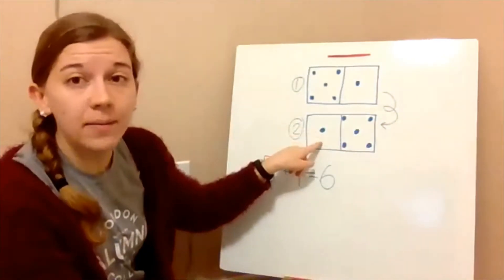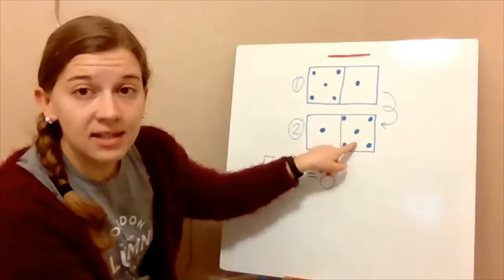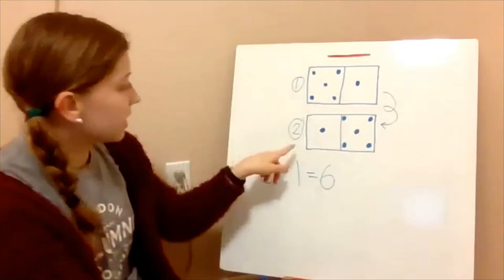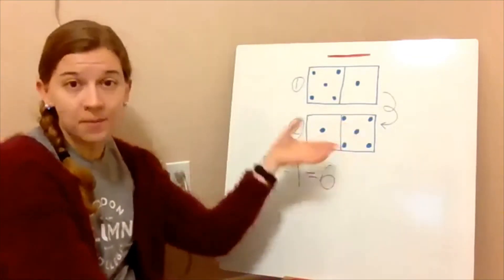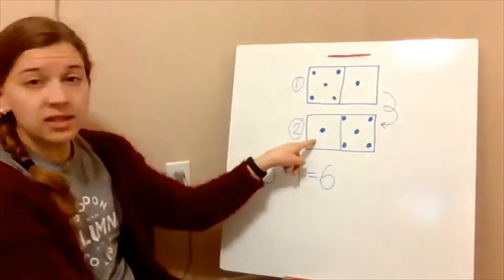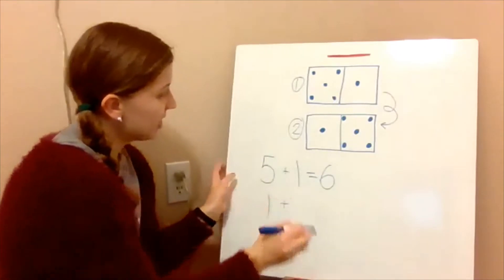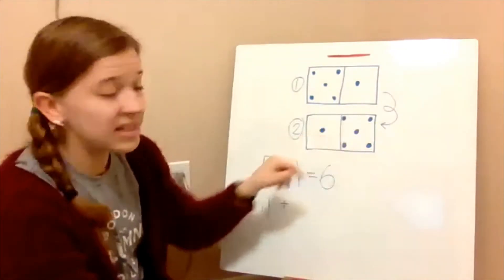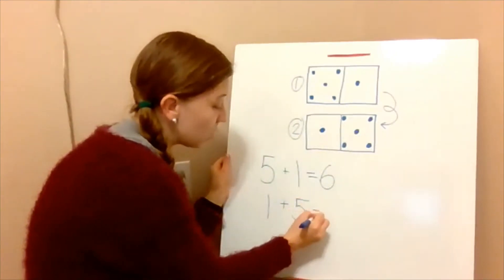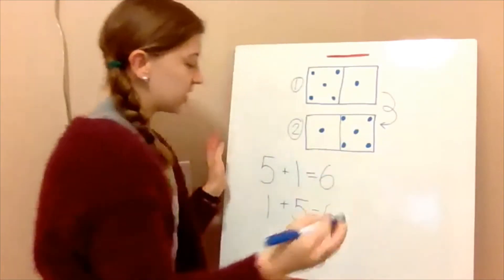So now on the left side we have one dot, and on the right side we have five dots. Then all together we have six. So the addition fact for the flipped domino would be: one plus five equals six.